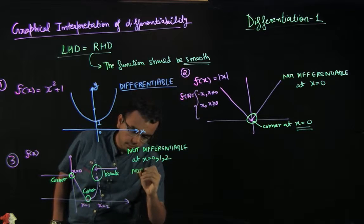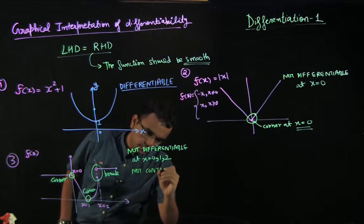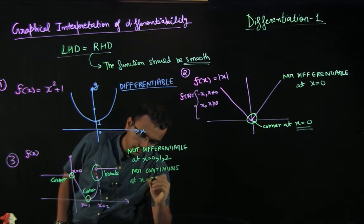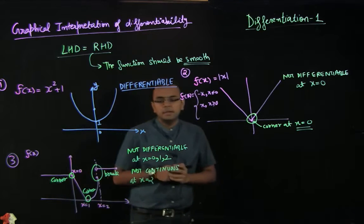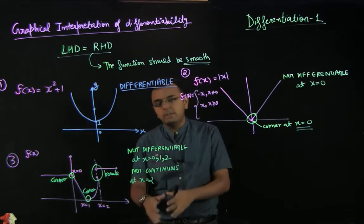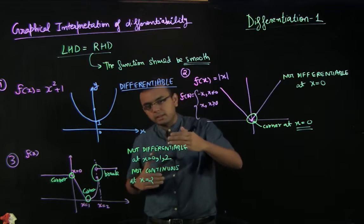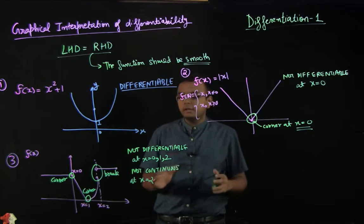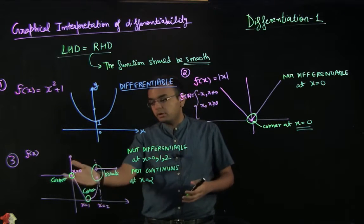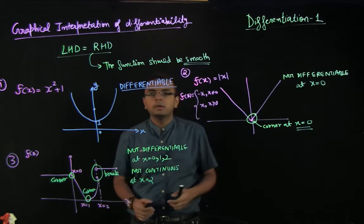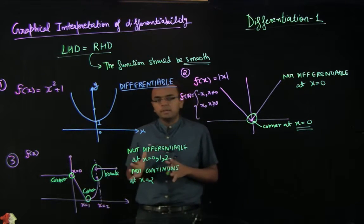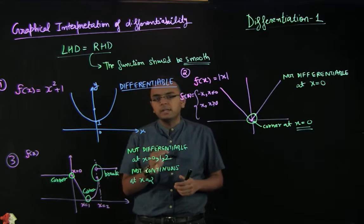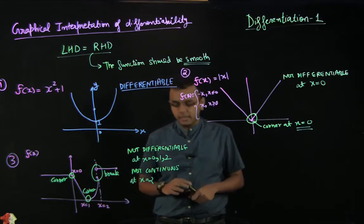This is why I took this example: whenever a function is not continuous, it will definitely not be differentiable — if there is a break in the graph, it will obviously not be smooth. On the other hand, if a function is not differentiable, it may still be continuous, like at x equal to 0 and x equal to 1. This is the key difference between continuity and differentiability, which we will cover in more detail in the next video.